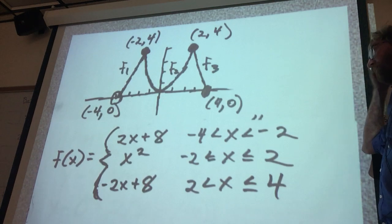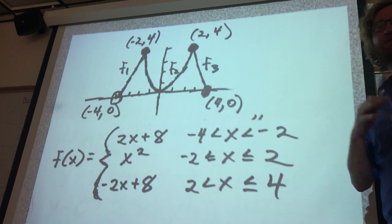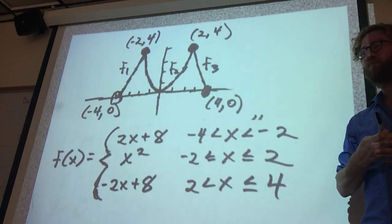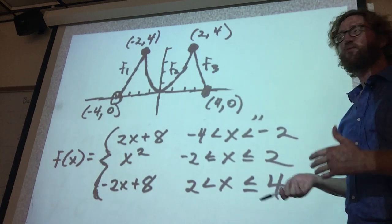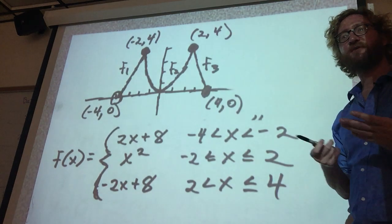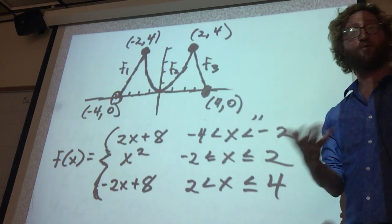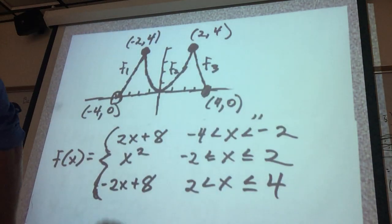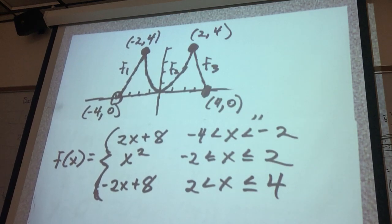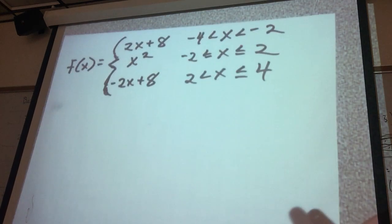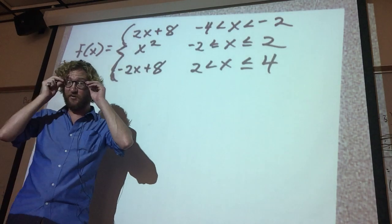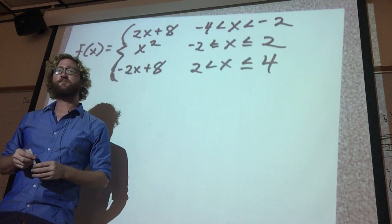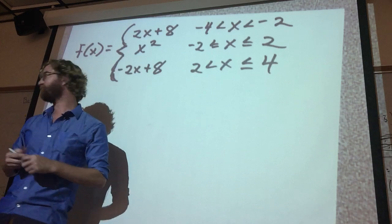Think about the difference between continuity and differentiability. Instead of looking at the graph and saying the limit from left or right equals the same point, let's do a formal definition of how we would define a function to be continuous at a point. If you're given this piecewise function and talking about its continuity — no graph, just the function — how would we prove it is continuous at a point?